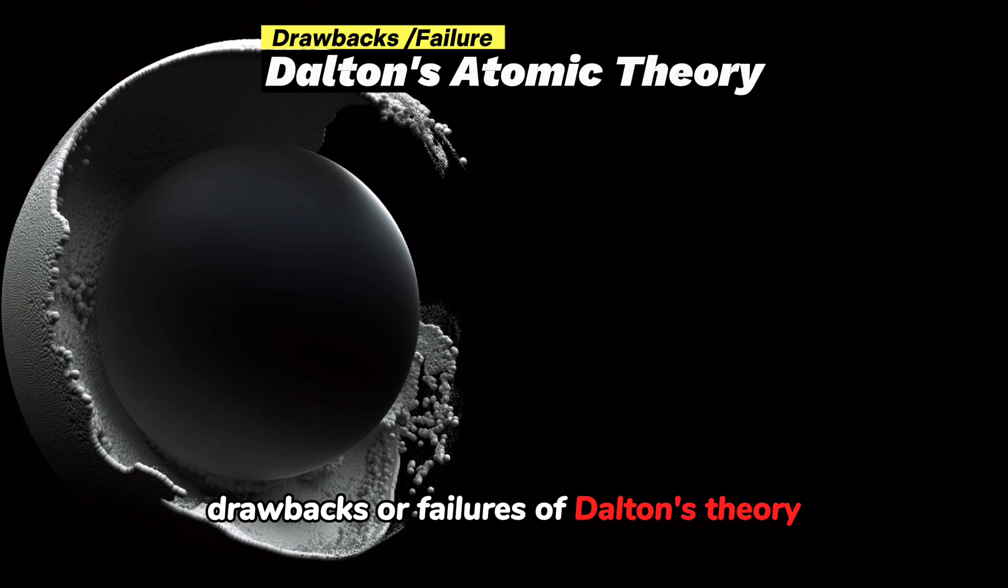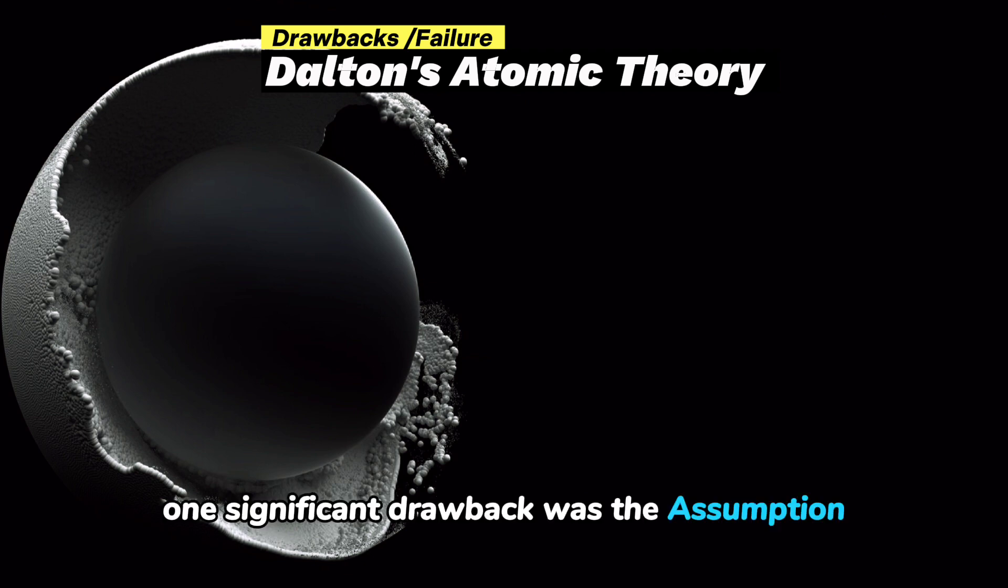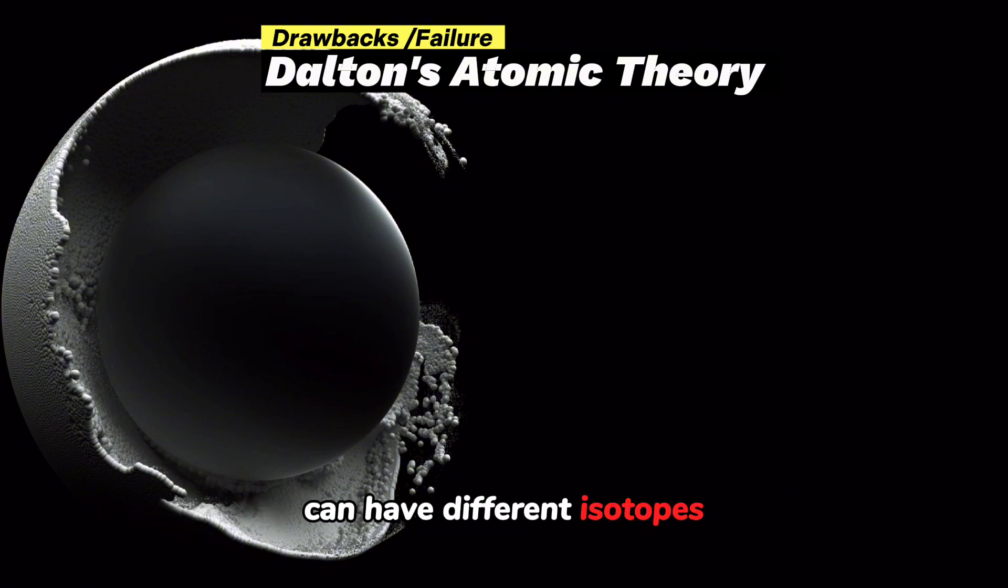Drawbacks or failures of Dalton's theory. While Dalton's atomic theory was groundbreaking, it had its limitations. One significant drawback was the assumption that atoms of different elements are identical. We now know that atoms of the same element can have different isotopes with varying numbers of neutrons.